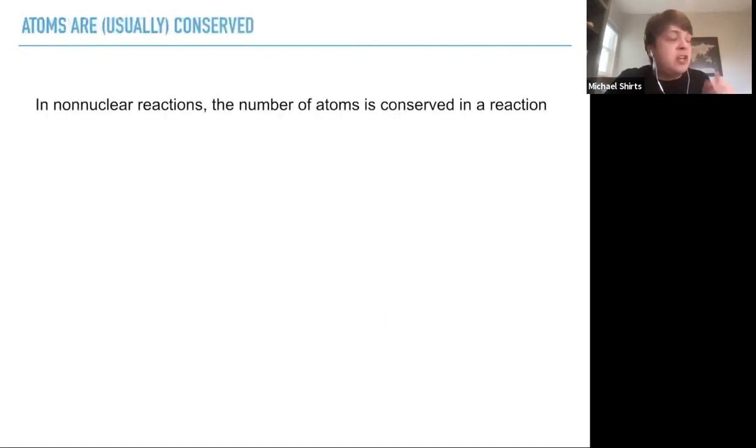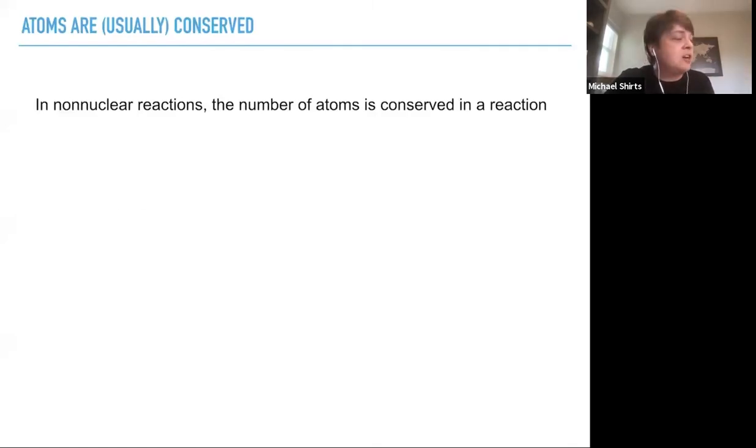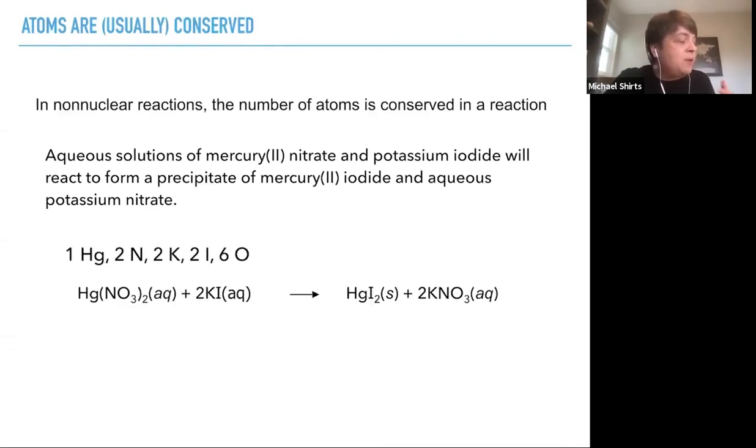Atoms are usually conserved in non-nuclear reactions, which again, I don't think we're going to quite get to the chapter on nuclear chemistry. But in everything we're going to study in this class, then the number of atoms of each type is conserved in a reaction. Again, we have our the same solutions mixed together. And at the beginning, we've got one atom of mercury, two of nitrogen, two of potassium, two of iodide, and six of oxygen. And we end up with one mercury, two nitrogen, two potassium, two iodine atoms, and six oxygen.